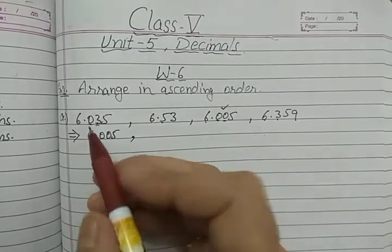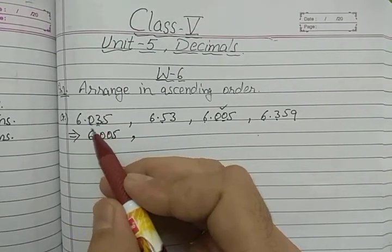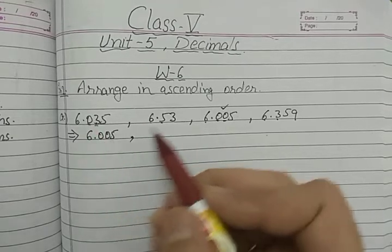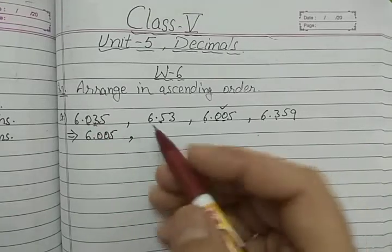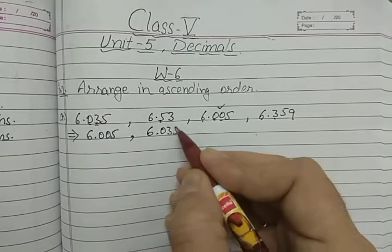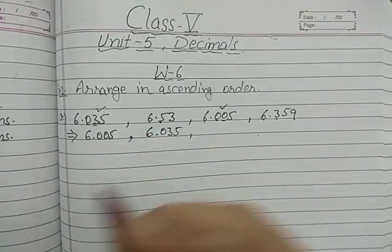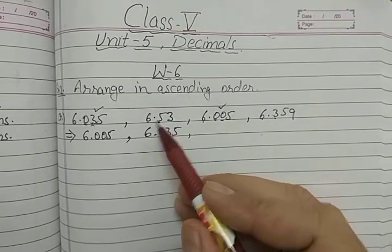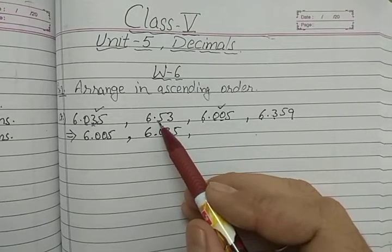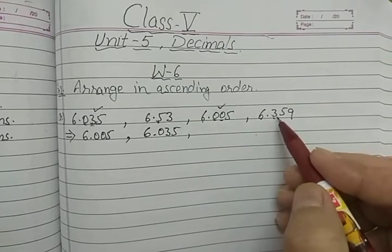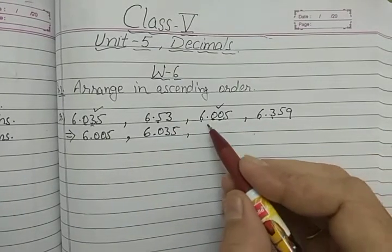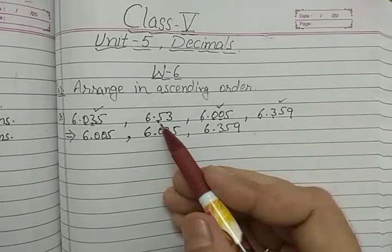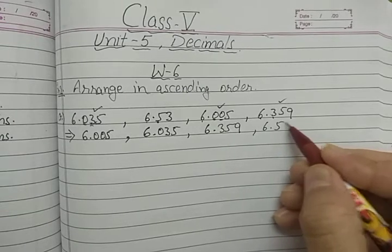Now three numbers remain. The next smallest has zero at the tenths place and 3 at the hundredths place, so that is 6.035. Now two numbers are left. Looking at the tenths place: 5 or 3 — three is smaller — so 6.359 is next, and the last remaining number 6.53 is the greatest. That is the ascending order.